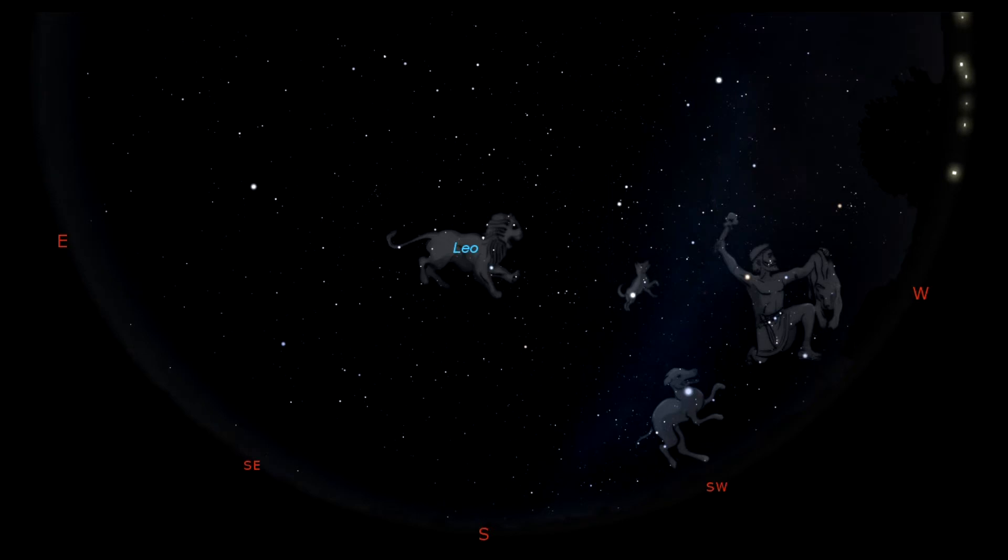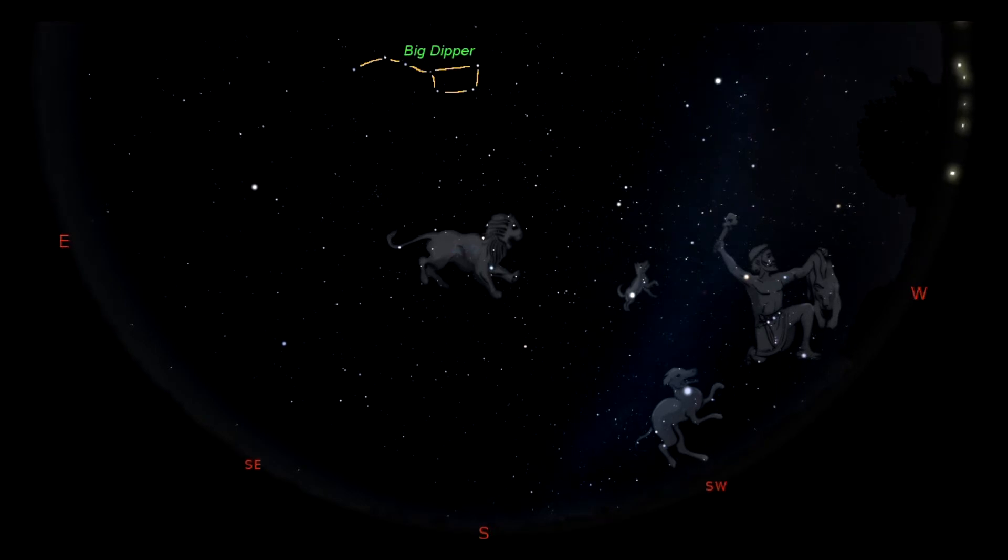Farther to the north, and nearly overhead, but again a little bit to the north, we can catch the seven stars that we usually refer to as the Big Dipper. If we take the three stars in the handle of the Big Dipper and move away from the handle, we can make a curve, or an arc.